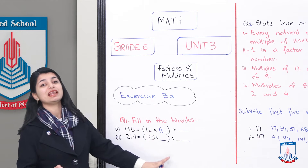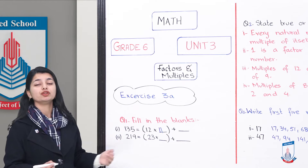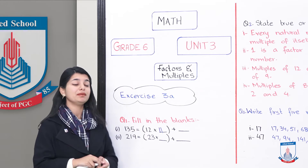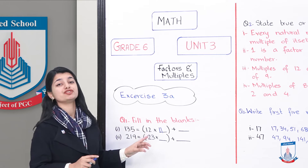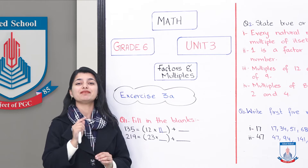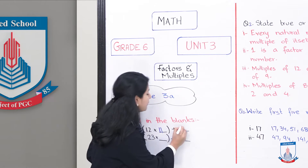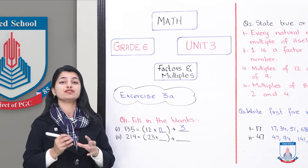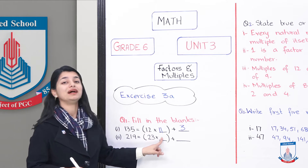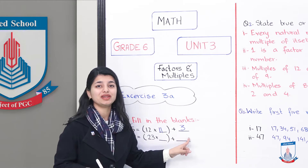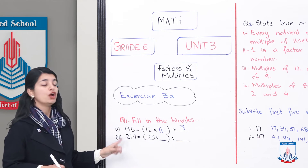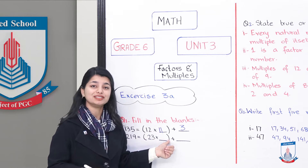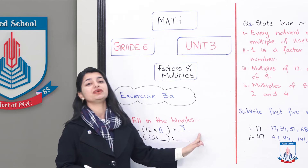Because 12 into 11 is 132. When you subtract 132 from 135, you get your remainder, which is 3. So your answer for the fill-in-the-blanks is: 12 multiplied by 11, plus 3, equals 135. If you verify: 12 into 11 is 132, and 132 plus 3 is 135.